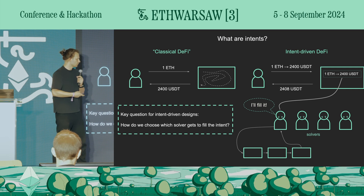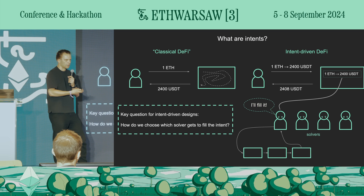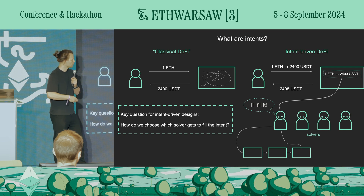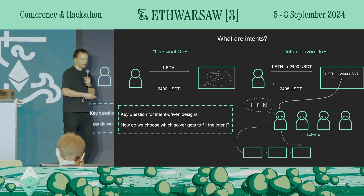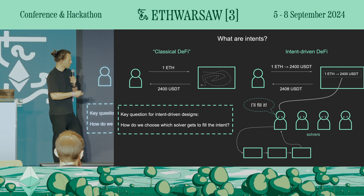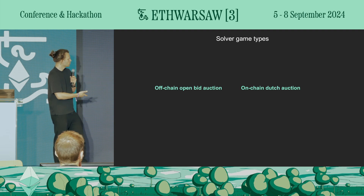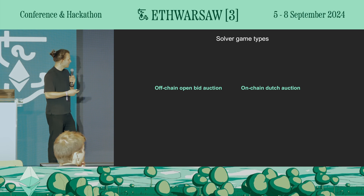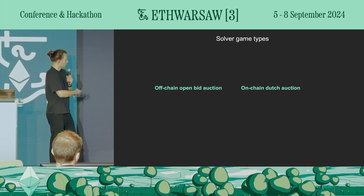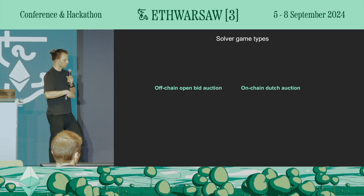Currently there are two well-known intent-driven designs: Uniswap X and CoW Fi. They indeed offer much better prices than any single smart contract like Uniswap, because the game-related overhead is small and solvers can use all available DEXs, not just one. There are two types of games that solvers play, corresponding to these two protocols: off-chain open bid auction, which is the approach CoW Fi uses, and on-chain Dutch auction, which is what Uniswap X is doing.